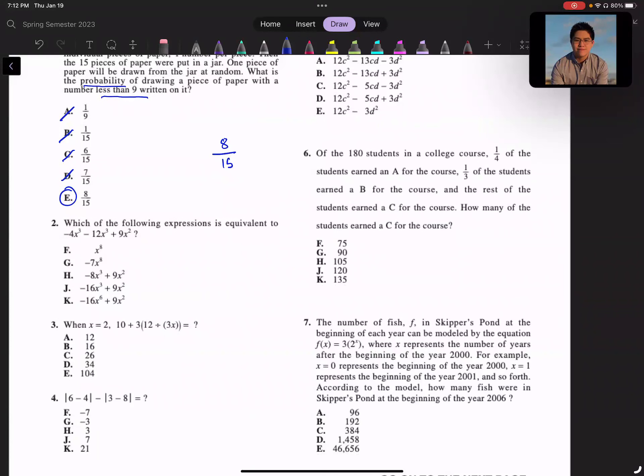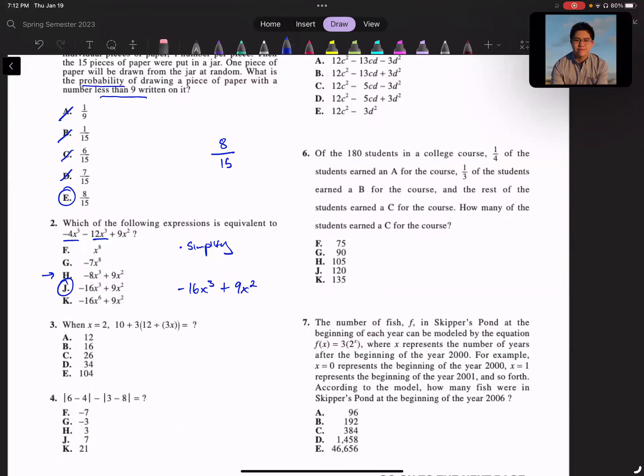For number two, which of the following expressions is equivalent to -4x³ - 12x³ + 9x²? The question is asking us to simplify this. They give us an expression. How do we do this? Just remember, I need to have them have the same power, and then I just add and subtract the coefficient like normal. So here, I see the cubes are the same. So -4 minus 12 would get me -16x³. And this is a squared, so I do that differently for the 9x². So plus 9x². Looking at my answer choices, I find one matched up. J would be the correct answer.